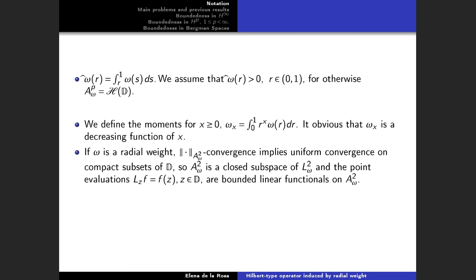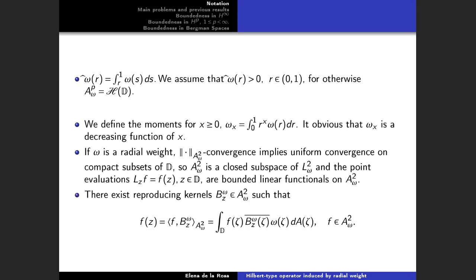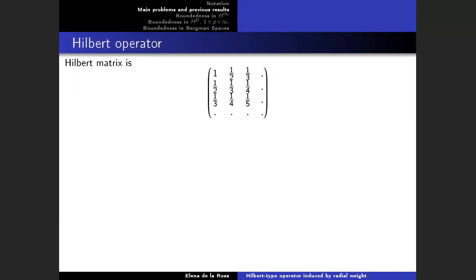If omega is a radial weight, convergence in the A^2(omega) space with its norm implies uniform convergence on compact subsets of D. So A^2(omega) is a closed subspace of L^2(omega) and point evaluations are bounded linear functionals on A^2(omega). By the Riesz representation theorem, there exist functions in A^2(omega) called reproducing kernels B^omega_zeta, such that the point evaluation can be expressed by the A^2(omega) scalar product of f and the reproducing kernel, given by this integral.